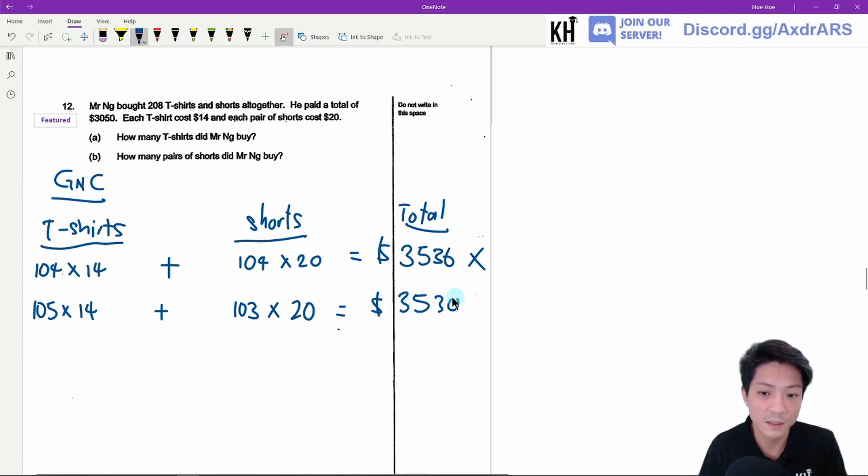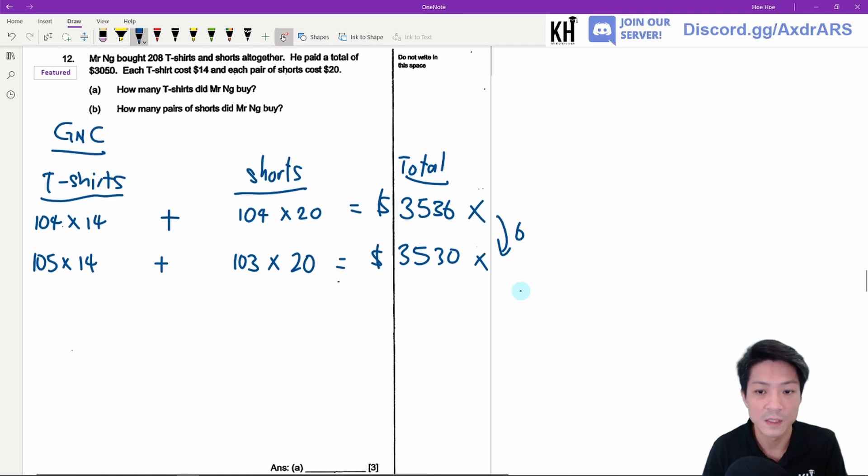3,530. This is obviously wrong, but what we want to find is the difference. The difference from the first guess to the second guess is 6, which means that every time I increase the t-shirt by 1, the difference will decrease by 6.